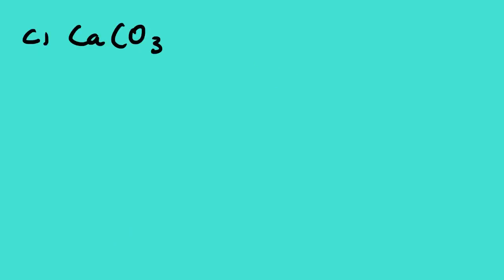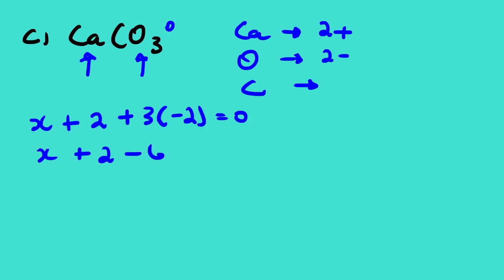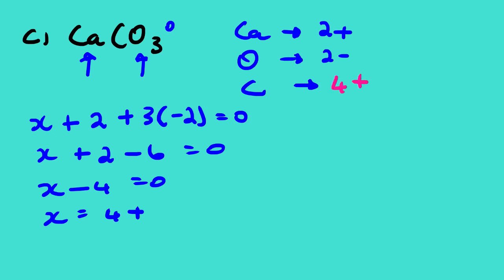Example 3: CaCO₃. Calcium is in Group 2 so it is 2+; oxygen is 2−; carbon is unknown (x). Setting up: x + (1 × 2+) + (3 × −2) = 0 → x + 2 − 6 = 0 → x − 4 = 0 → x = 4+. The oxidation number of carbon in CaCO₃ is 4+.